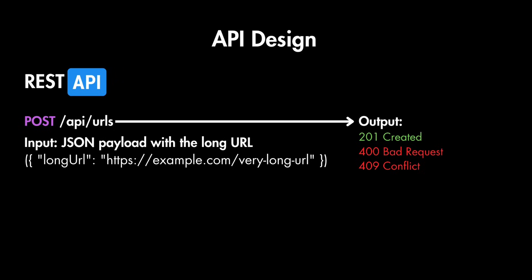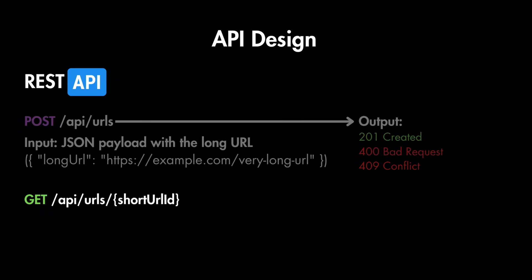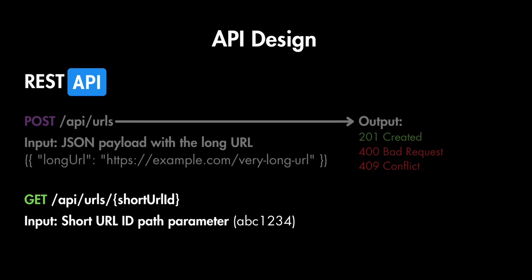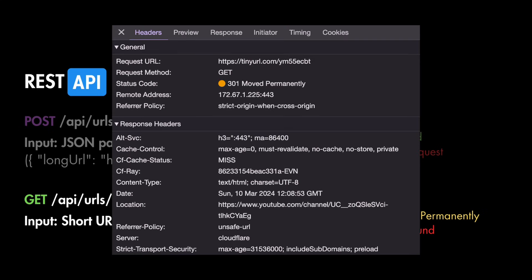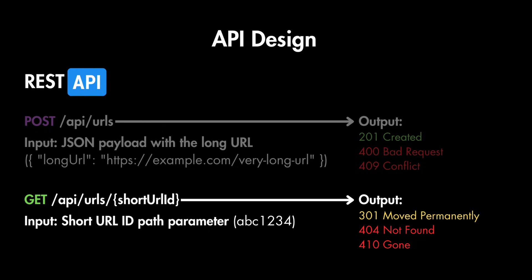If the requested URL already exists we return 409 conflict — this is optional depending on whether you allow duplicate entries. The second endpoint is GET to /api/urls/{shortUrlId}. The input is the short URL ID path parameter, and the output is an HTTP redirect to the long URL using a 301 status code, which indicates a permanent redirect and tells the browser to cache this mapping. However, if you want to track analytics on every request, use 302 instead of 301. We return 404 if the short URL ID does not exist, and 410 if the URL has been deleted or expired.